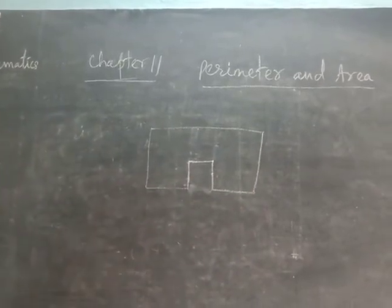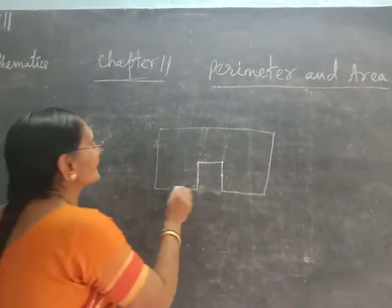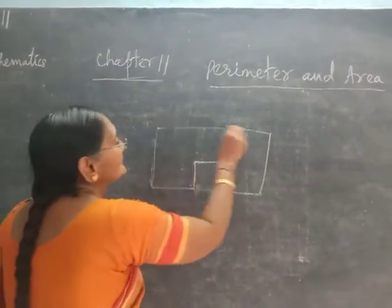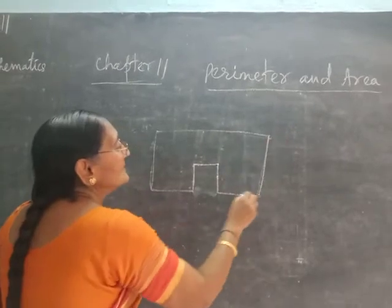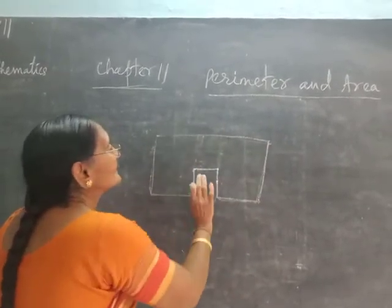Then the perimeter is not simply the original formula. You have to consider how much of the remaining portion is there and calculate accordingly.